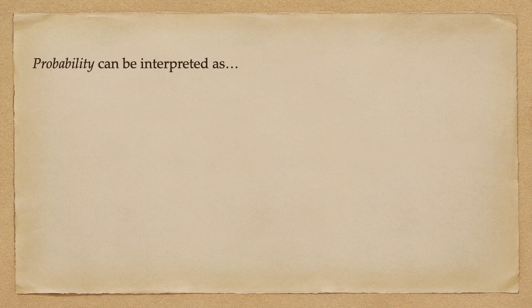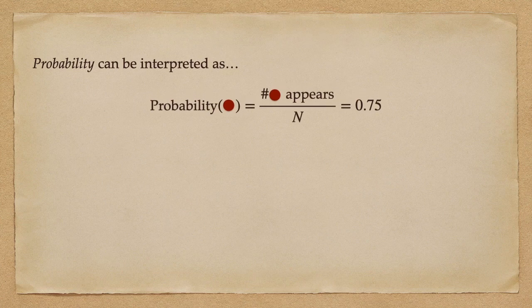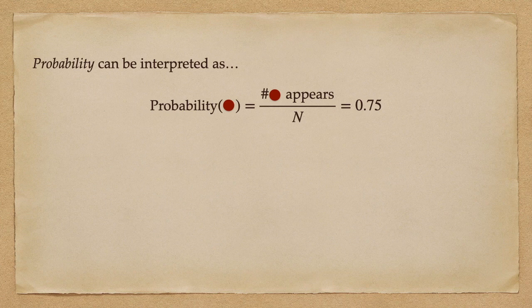This can be answered by taking the interpretation of probability. The probability that a red ball appears, as n goes to infinity, equals the number of times a red ball is chosen divided by the number of times the experiment is run, n.